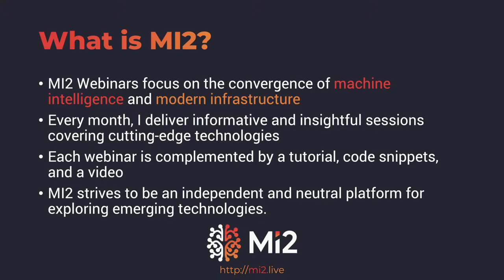What is MI2? MI2 webinars are basically focused on the convergence of machine intelligence and modern infrastructure. Machine intelligence is all about IoT, AI, machine learning, deep learning, neural networks, and everything related to artificial intelligence. Modern infrastructure is all about Kubernetes, containers, container orchestration, serverless computing, edge computing, and everything related to infrastructure. Every month I deliver a session from one of these tracks, and as we see, there is a convergence of cloud native with AI — that's where intelligence meets infrastructure.